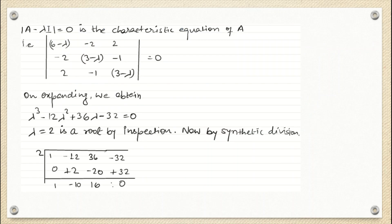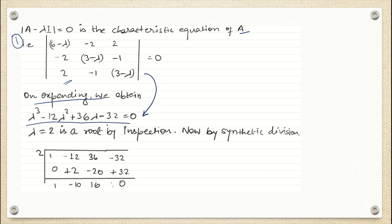The very first step is the characteristic equation of the given matrix A. We are going to subtract lambda in the diagonal positions — why we write it that way was discussed in the last class, so I suggest you go through the previous video first. Now we expand the determinant and we are getting this equation. This is my first step — the characteristic equation has been expanded.